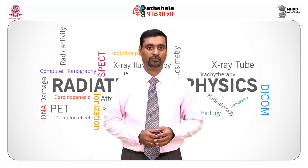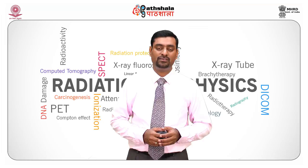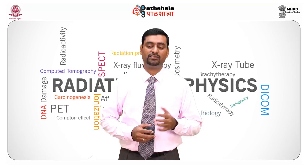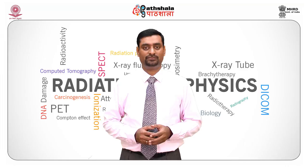What is a radiographic film? A film is a thin plastic sheet with a photosensitive emulsion coated on one or both sides of the sheet. The emulsion contains silver bromide crystals which are distributed evenly in gelatin. So this radiographic film is like a plastic screen where the emulsion can be coated on a single side or on both sides.